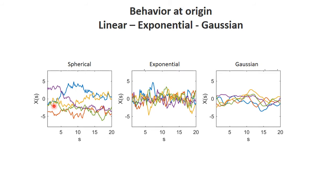In the next two slides, I'll show you two different behaviors: one where the variogram increases faster than linear — for example, exponential — and one where the variogram increases slower than linear, which is called Gaussian. The increase at the origin is very important because it has a tremendous effect on the nature of the signal. If I go faster at the origin, I get a signal that is much more varying — it doesn't contain noise, it just varies more. A Gaussian-type signal has much smoother variation and therefore much smaller correlation at short distances.